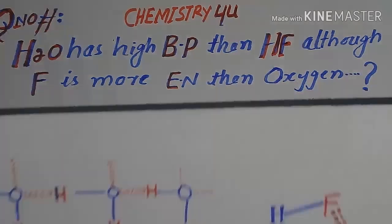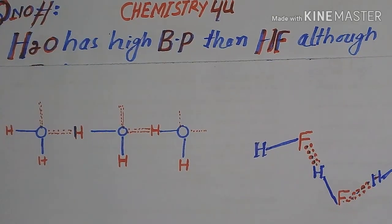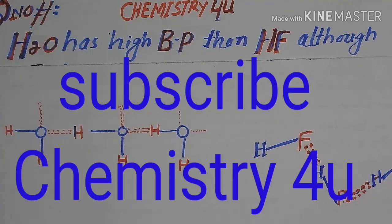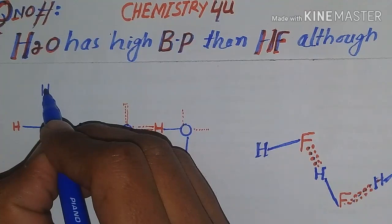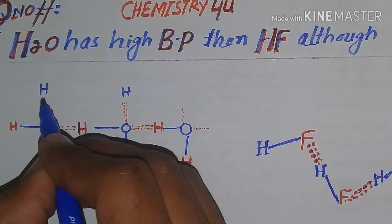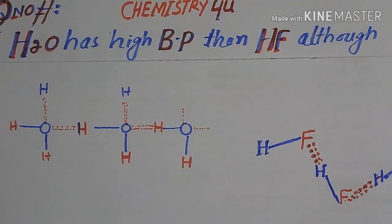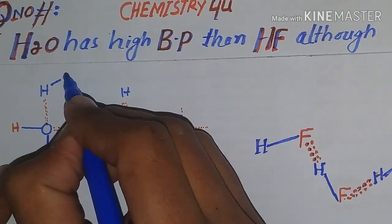Let's suppose this is the molecular structure of HF and H2O molecule. In case of H2O molecule, one H2O molecule can form two hydrogen bonds. Here is another hydrogen, and hydrogen means that here is electropositive hydrogen attached with oxygen.